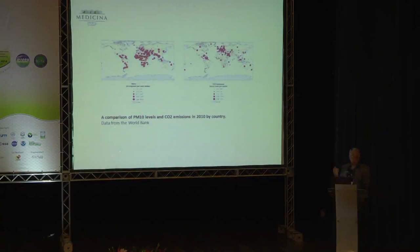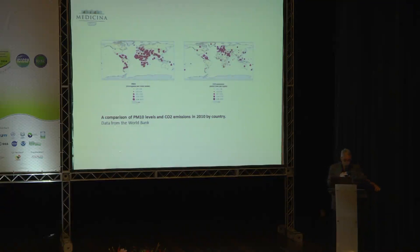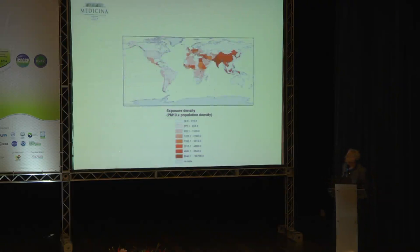There is clearly a mismatch between air pollution levels and CO2 emissions per capita. Countries that have higher emissions of greenhouse gases tend to have lower air pollution. The higher levels of pollution occur in areas with relatively low emissions of greenhouse gases.